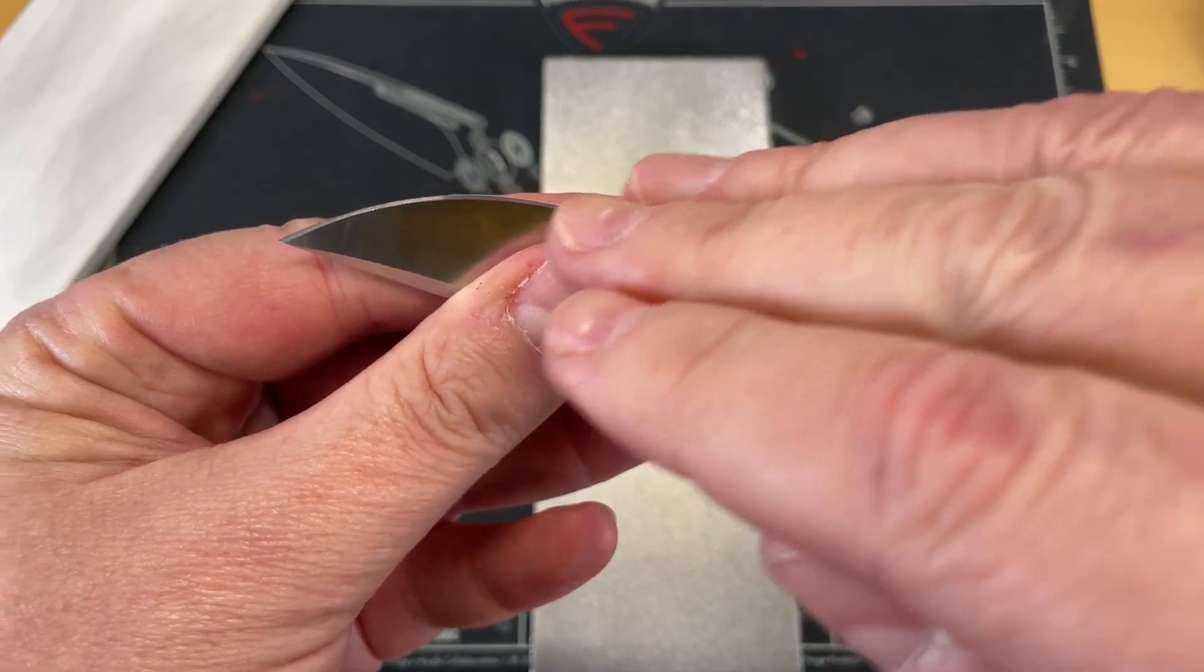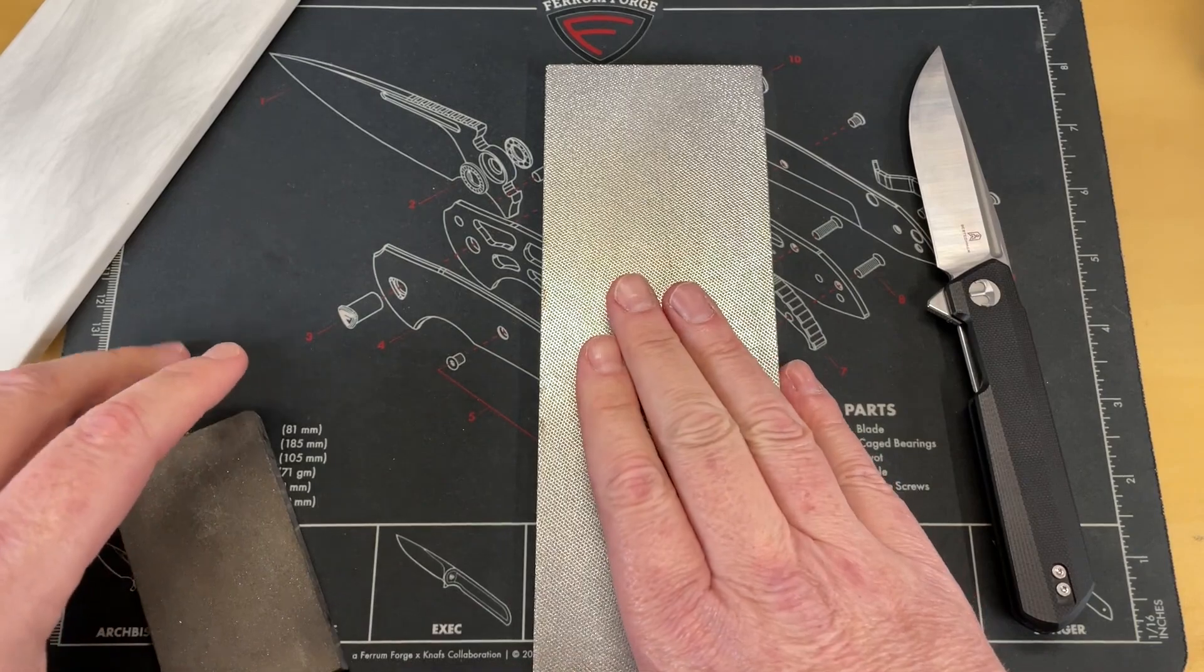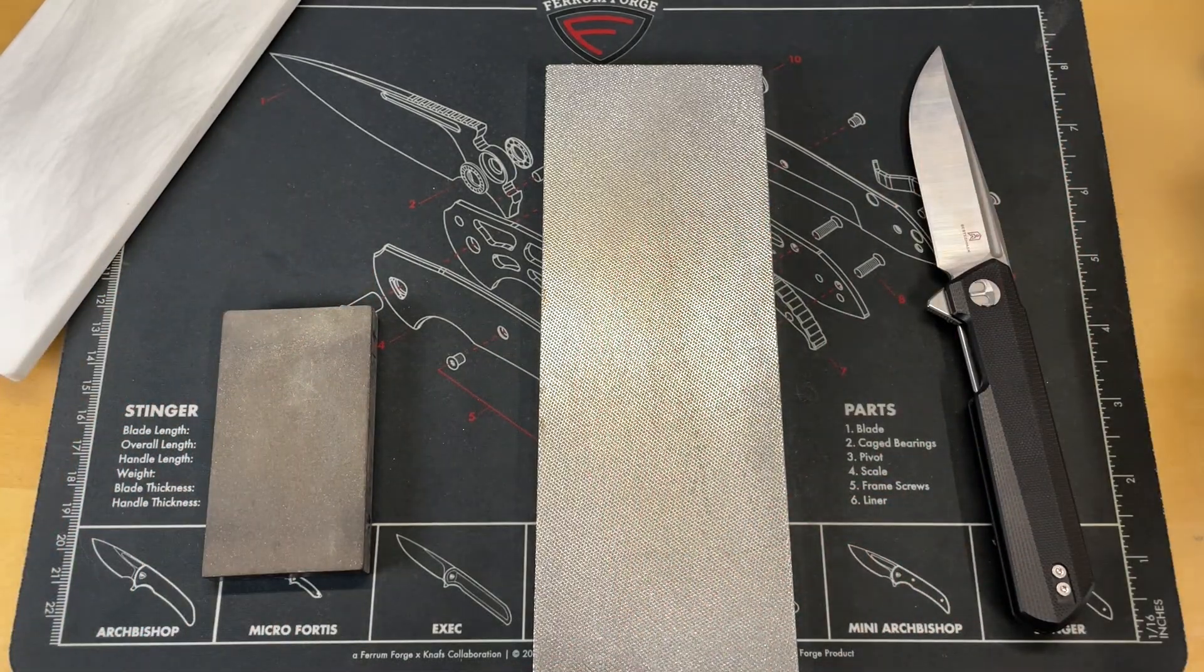What happens with that is you're establishing a scratch pattern. So the coarser your stone, the coarser that scratch pattern is going to be.